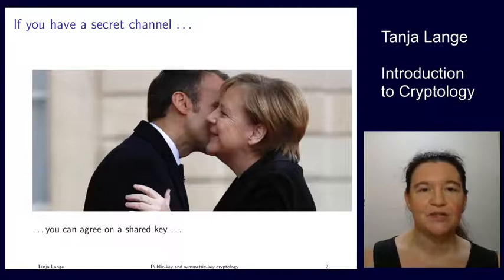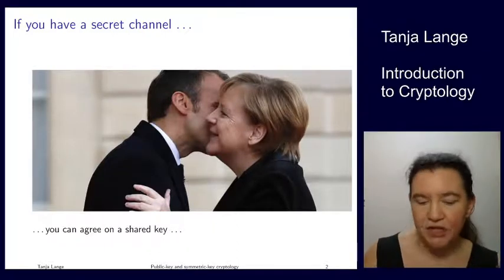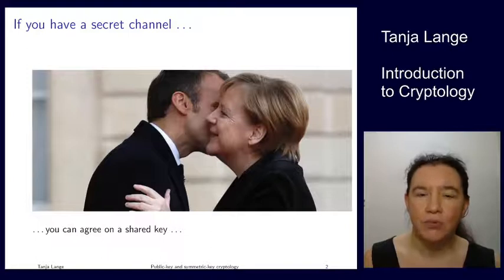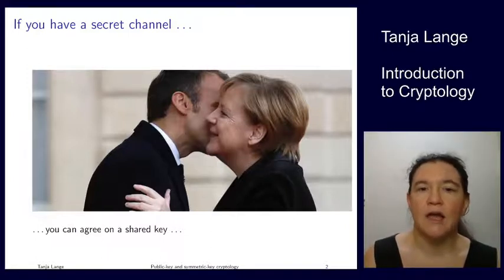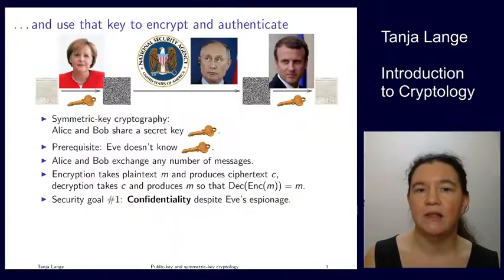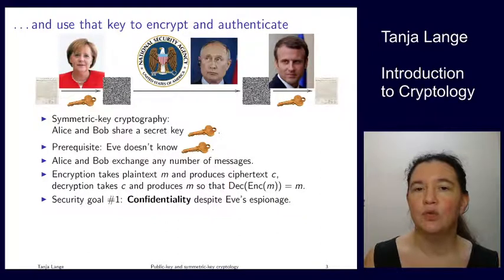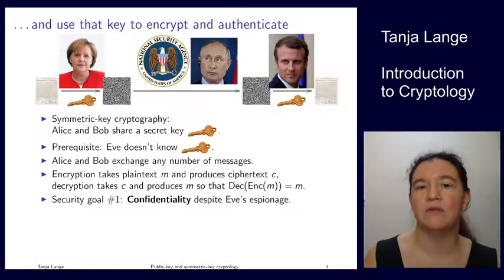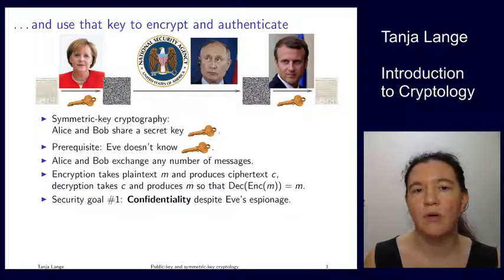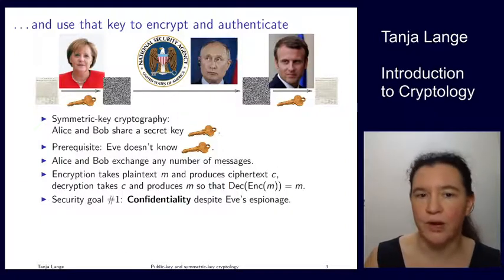We've been covering the situation where Alice and Bob have at some point met. They could whisper in each other's ear, and so at that point we understand where they have gotten a shared key. Everything we've done so far assumes that Alice and Bob have shared a key that attacker Eve doesn't know. We've been covering how Alice and Bob can use such a key to encrypt messages, and we will soon cover how they can authenticate messages.